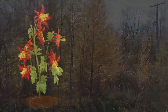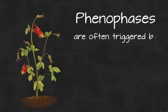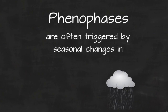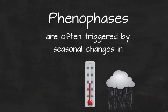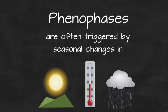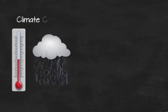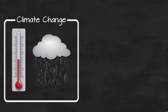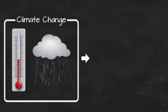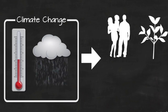Life cycle events are often triggered by seasonal changes in rainfall, temperature, and day length. Phenophase timing is important to study because it's impacted by changes in climate, and impacts on phenophase timing by climate can impact humans, plants, and animals too.